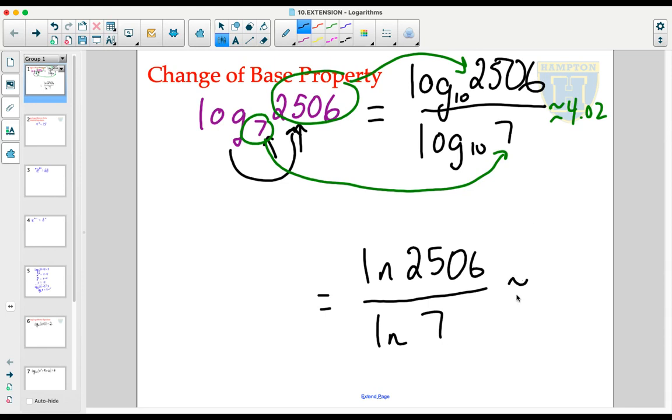Typing both of those into a calculator, we get the exact same result, about 4.02, which tells us that 7 to about the power of 4.02 is 2,506.